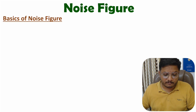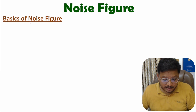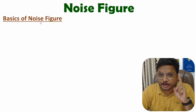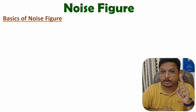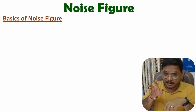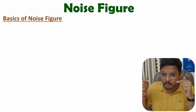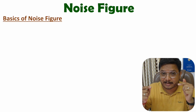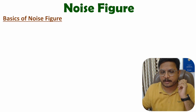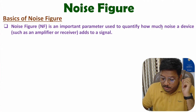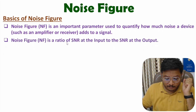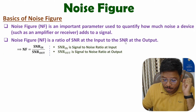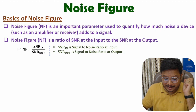Let us start with the first agenda — basics of noise figure. Noise figure is a ratio of SNR at input to the SNR at output. So if you have a device with an input SNR and output SNR, then based on the ratio of input SNR to output SNR, one can identify the noise figure. Noise figure explains how much noise a device adds to the signal.